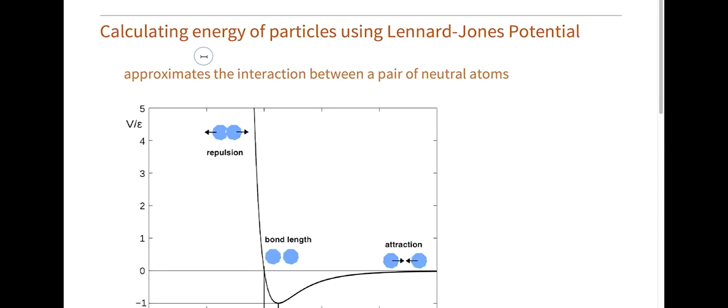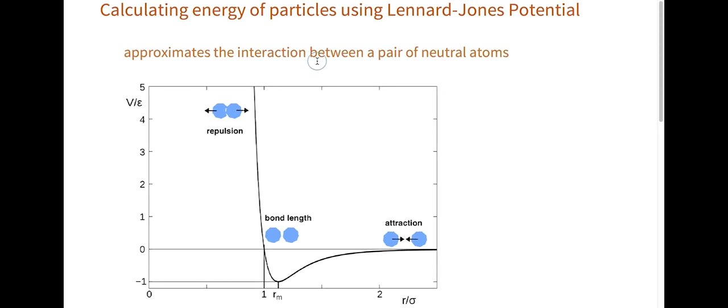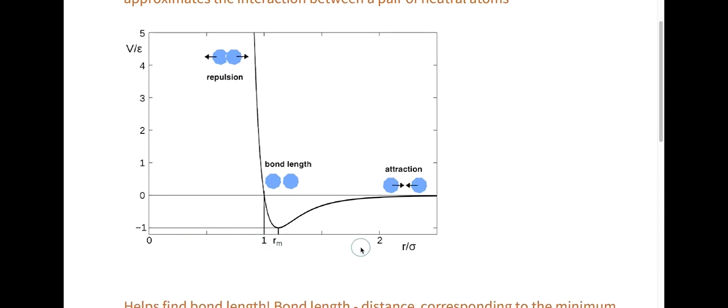One way we can calculate the energy of atoms is using Lennard-Jones potential. Lennard-Jones potential approximates the interaction between a pair of neutral atoms. In this graph here, the x-axis is the distance between atoms, and the y-axis is the measure of potential energy. You can really see in this function how there's an energy well, or minima.